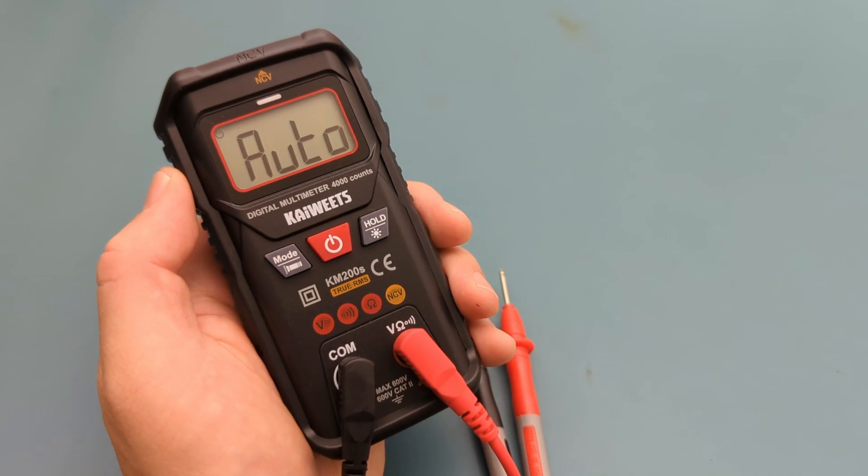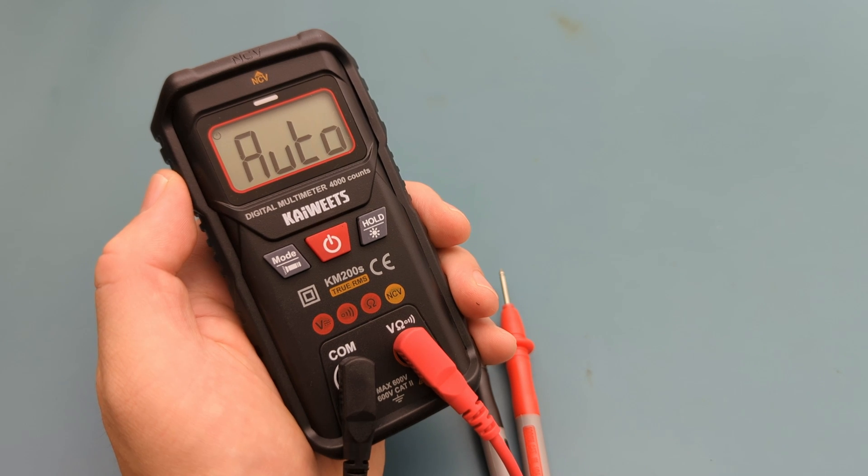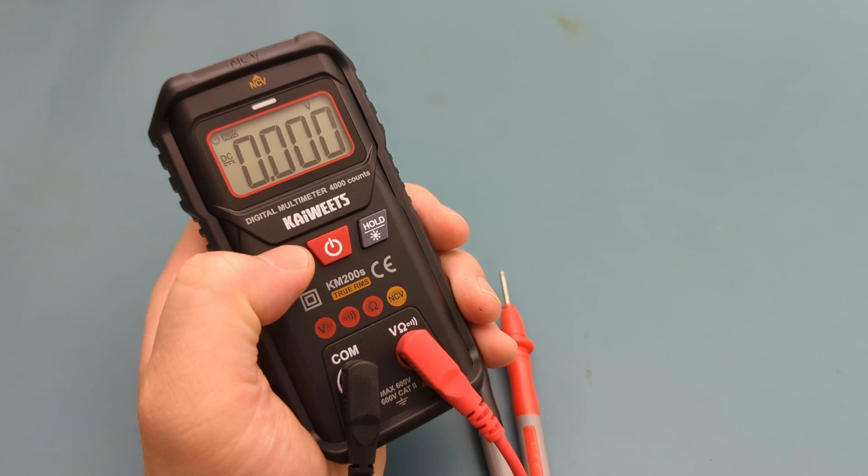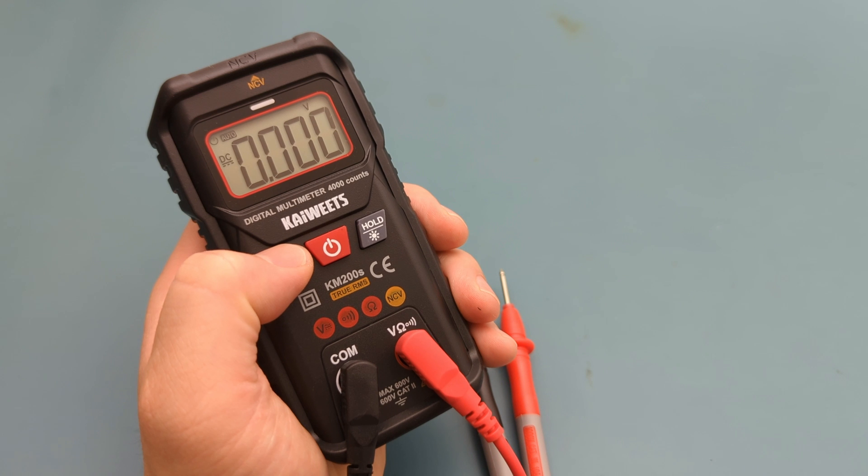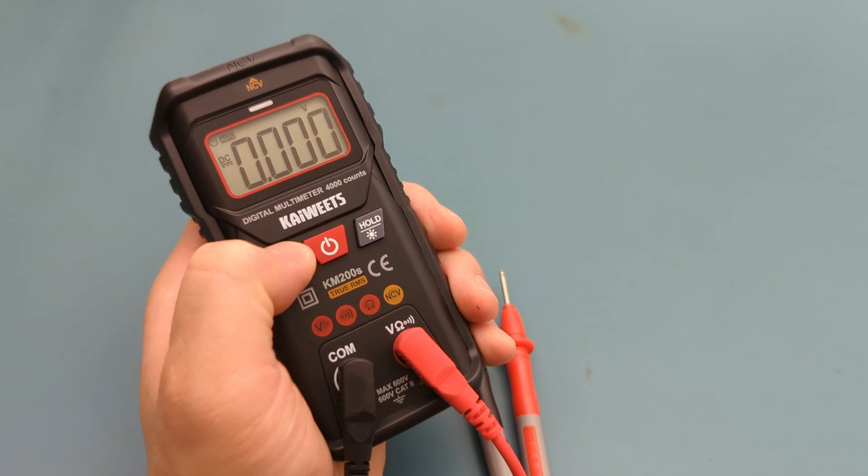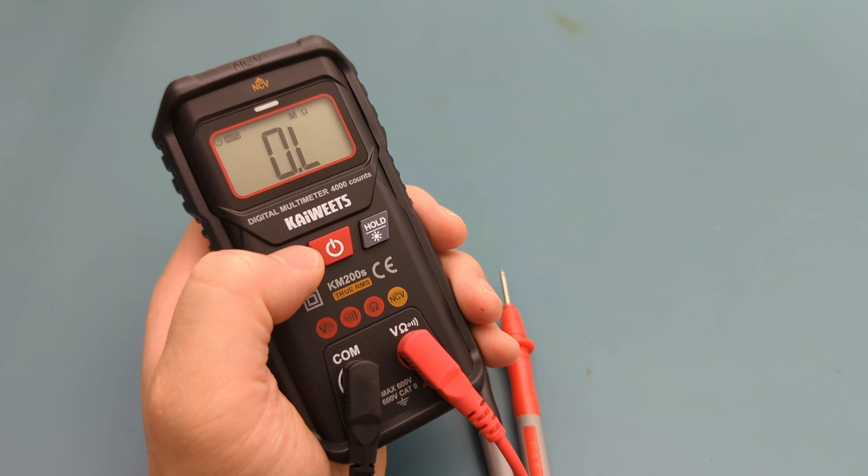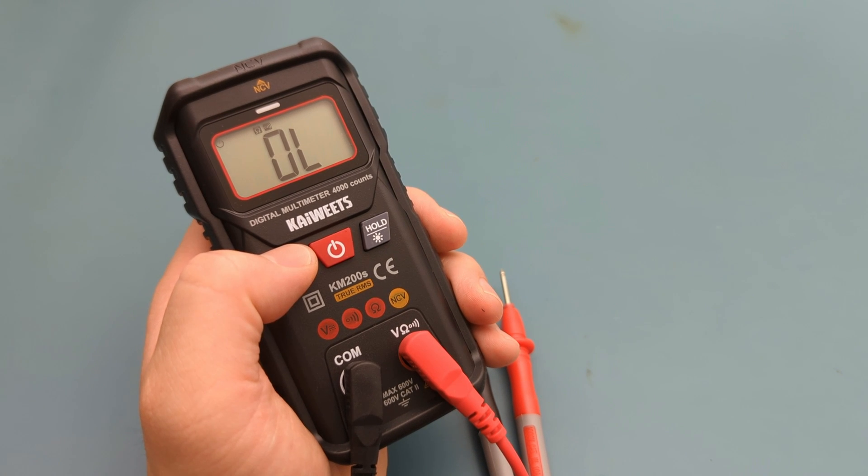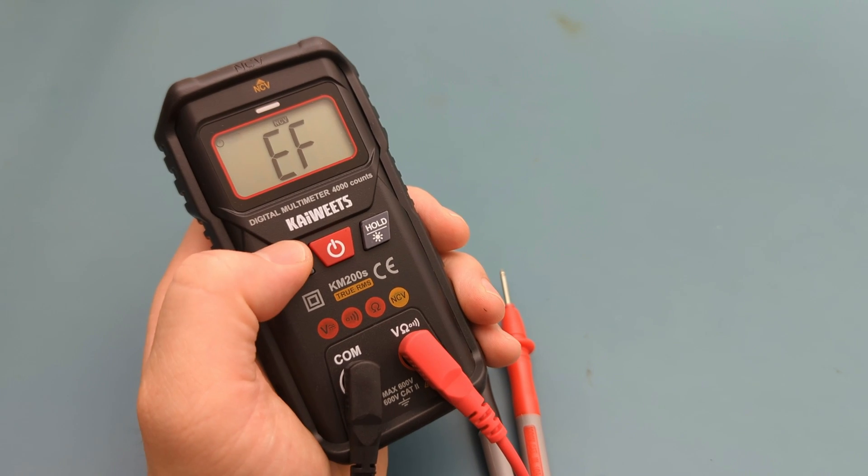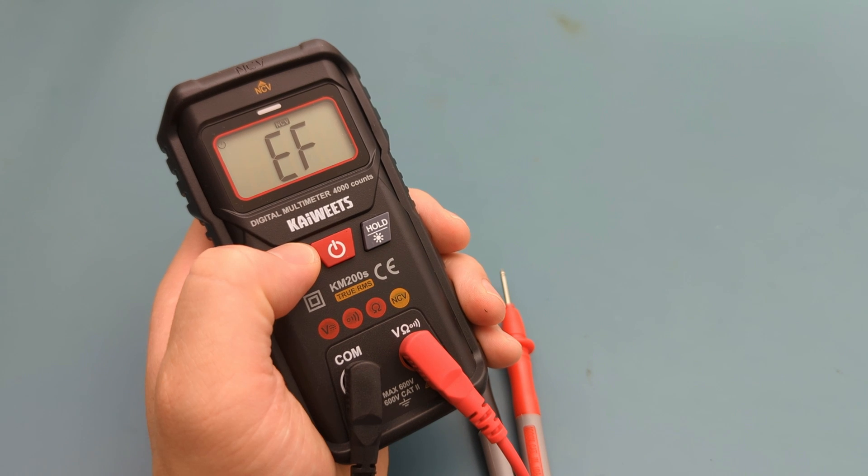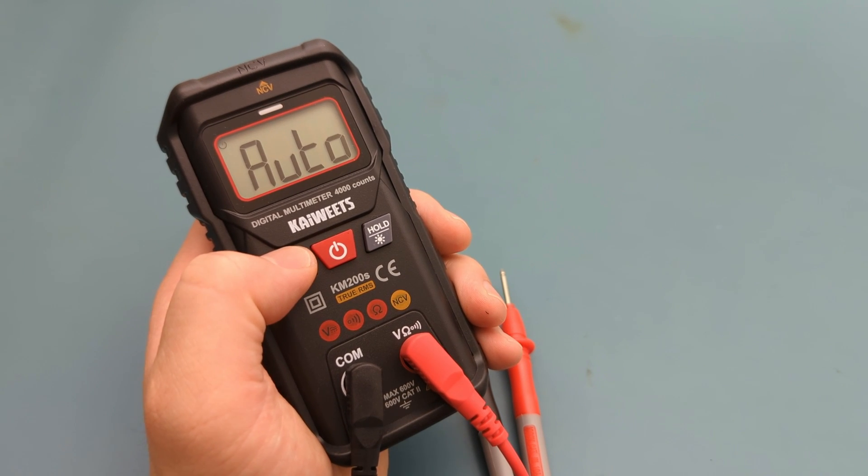When you switch on the meter, it starts in auto mode. Press the function button to switch to manual mode. The first option is DC voltage. The next is AC voltage. The next is to measure resistance. The next is detect continuity. The next is to detect non-contact AC voltage. When you press the function button again, it goes back to auto mode.